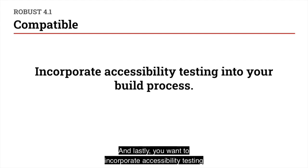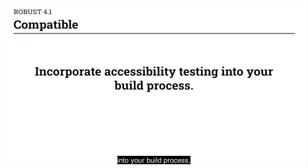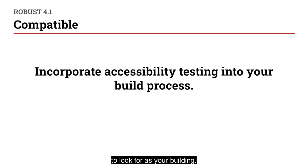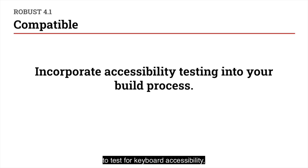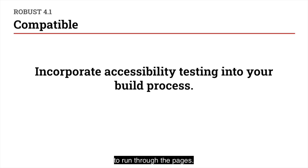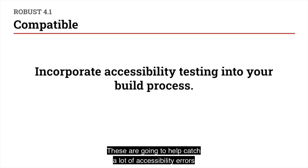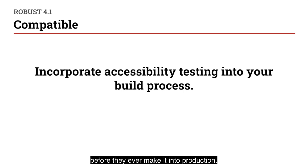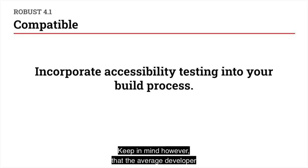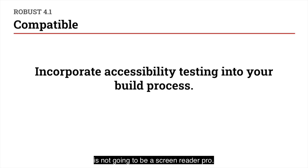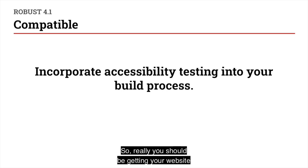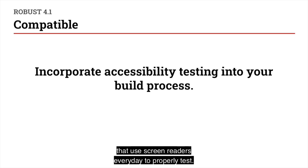Lastly, you want to incorporate accessibility testing into your build process. Come up with a basic checklist of things to look for as you're building. You can use automated testing tools, you can tab through the pages to test for keyboard accessibility, and maybe even learn some screen reader basics to run through the pages. These are going to help catch a lot of accessibility errors before they ever make it into production. Keep in mind, however, that the average developer is not going to be a screen reader pro, so really you should be getting your website into the hands of folks that use screen readers every day to properly test.